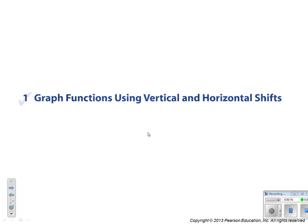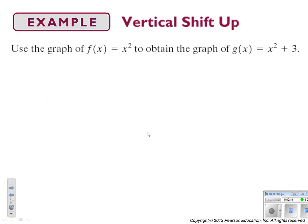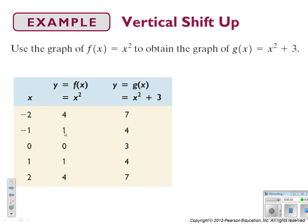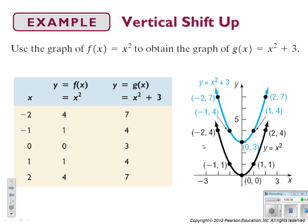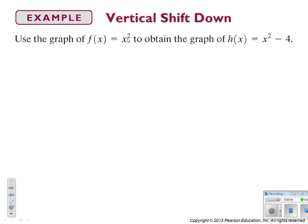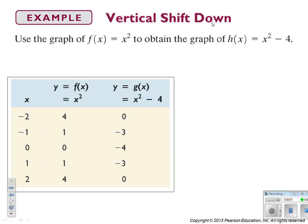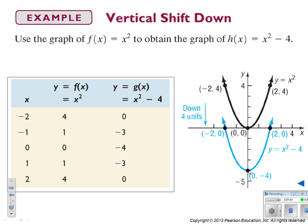We're going to first look at vertical and horizontal shifts. If we have a function and we add 3 to the entire function, it's going to have a vertical shift up — each of the y-coordinates gets 3 added to them, so it moves the entire graph up 3 units. When you take that same function and subtract an amount from it, it gives a vertical shift down, subtracting 4 from each y-coordinate moves the entire graph down 4 units.